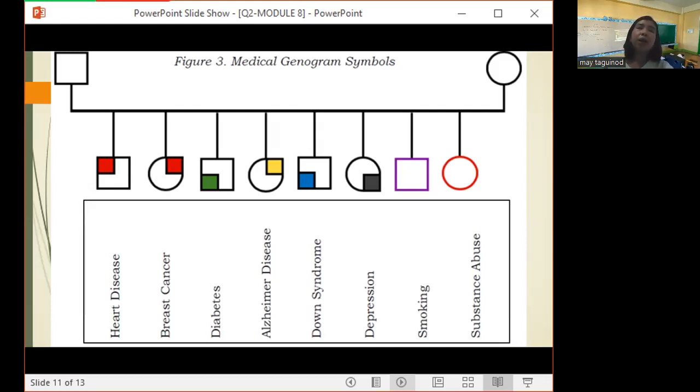Then for Alzheimer's disease, we have a circle shape, then at the upper right corner of the circle, there is a square and a yellow color. Then for Down syndrome, a square, then another small square inside placed in a lower left corner of the square and it is colored blue. Then for depression, we have a square, then at the lower right corner, there is a small square inside the circle, and it's colored black.